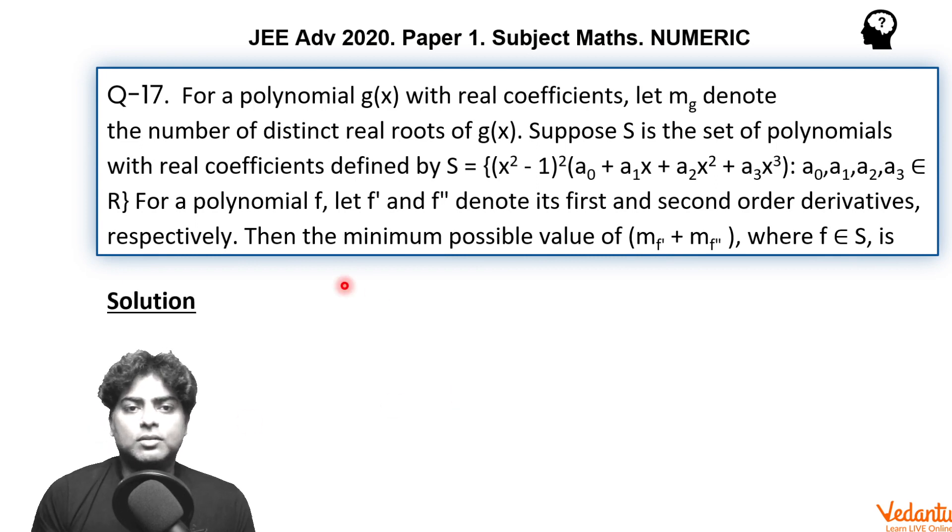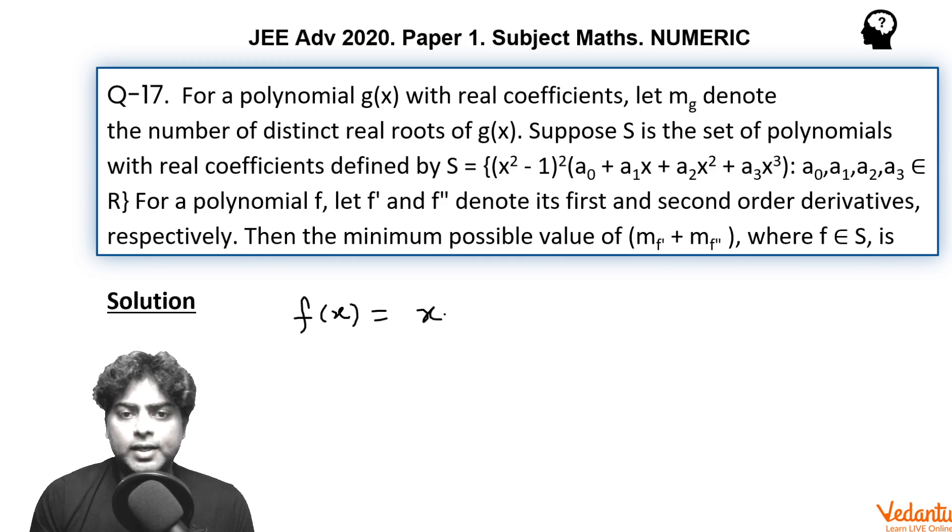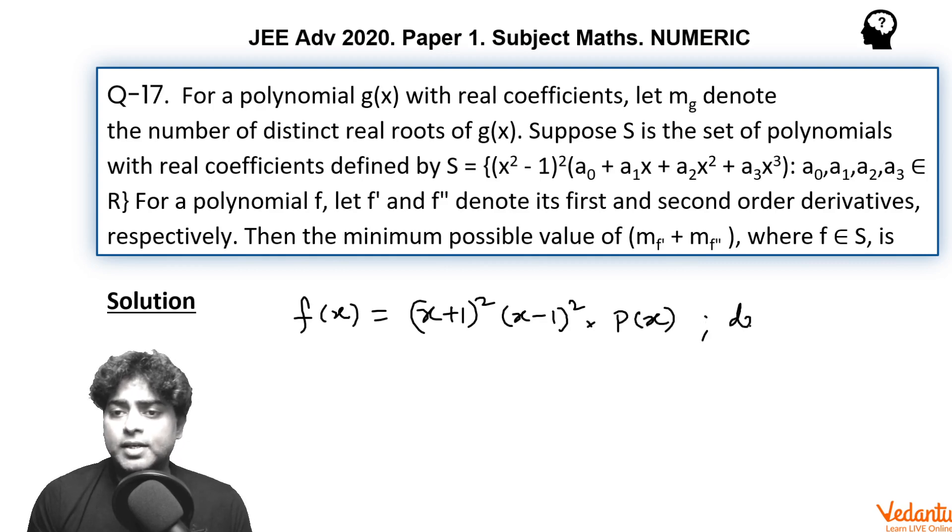So, in order to ensure the minimum number of distinct real roots of f' or f'', we will have to ensure the minimum distinct real roots of f. f(x) equals (x + 1)² times (x - 1)² times P(x), where degree of P is less than or equal to 3.